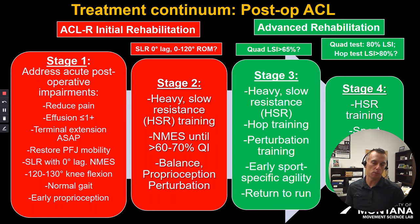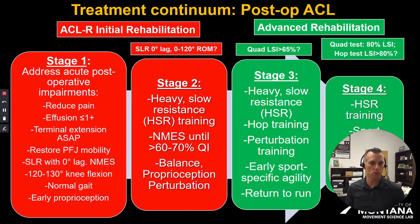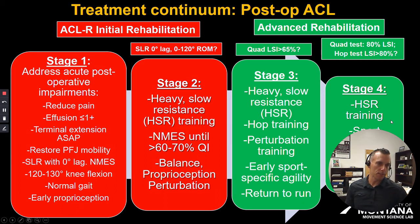From there, we move on to stage three, again continuing heavy, slow resistance training, which is going to be a long-term commitment on the part of the athlete. At this point, we're going to start doing things like perturbation training, return to run, and some early sports-specific agility. What we're going to be talking a lot about today is stage three, but we'll also talk about some things in stages one and two that can set us up for success. Behind me we've got things like heavy, slow resistance training continuing, plus very sport-specific things so we can get the athlete back to return to performance.